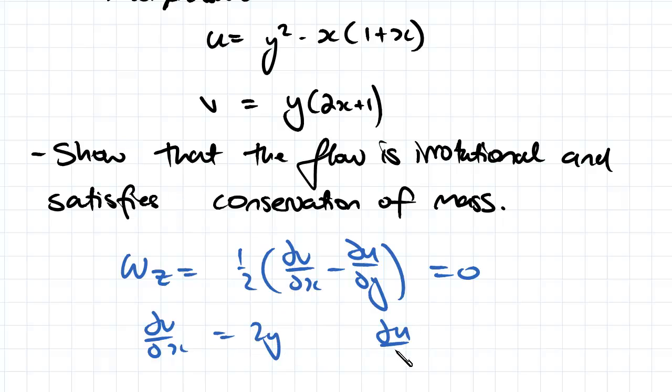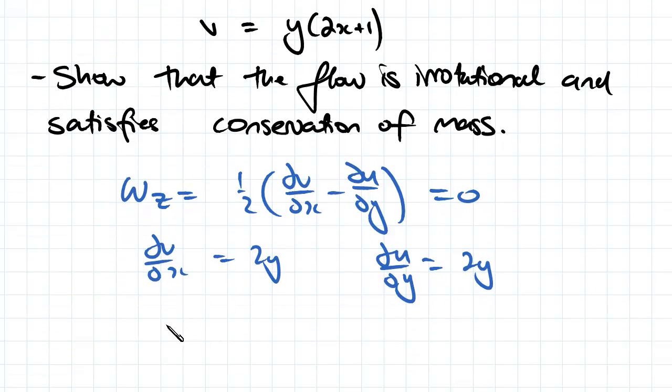And then du/dy is going to be equal to... this whole term here is just going to go to zero, no y is in it, and this here is just going to go to 2y. So now we've got dv/dx, du/dy, and then w_z is going to be just equal to one-half times 2y minus 2y...